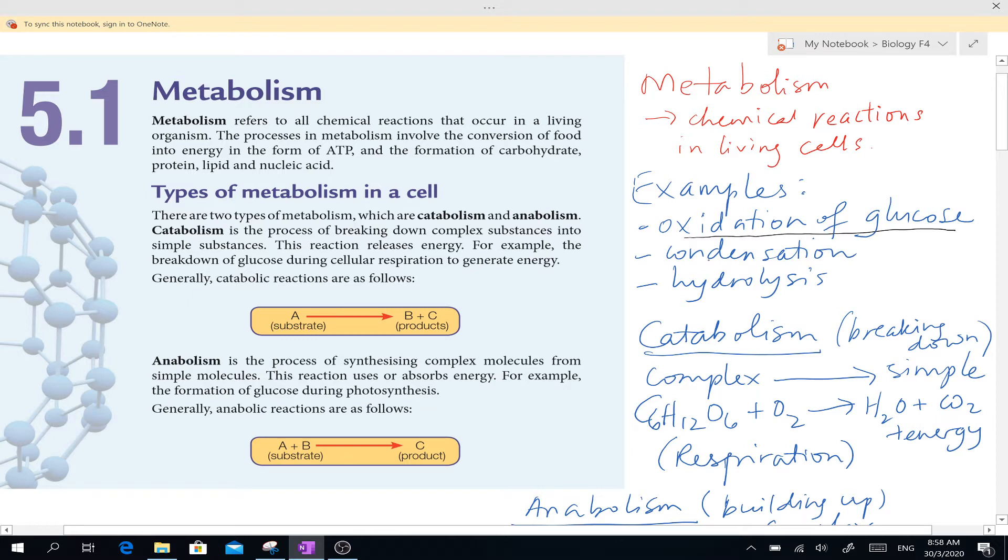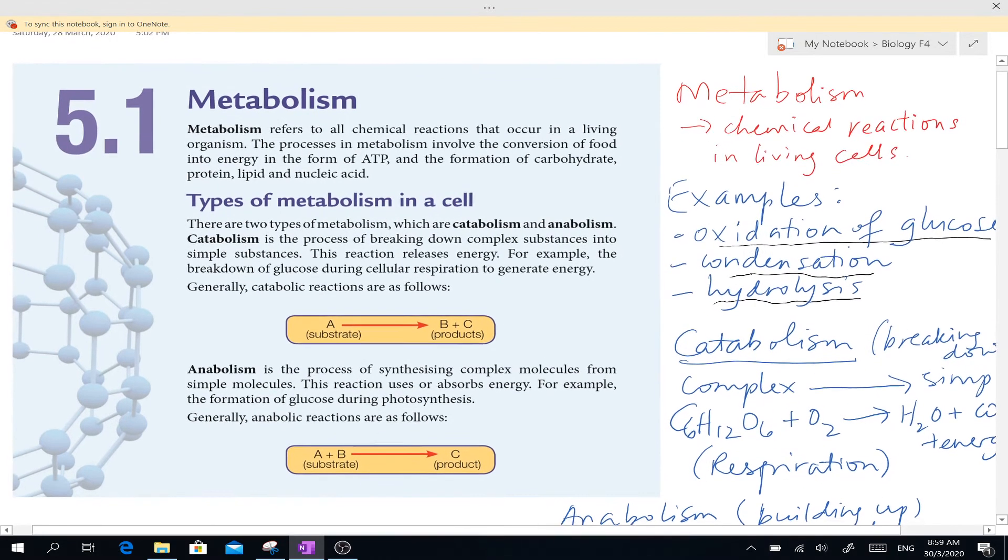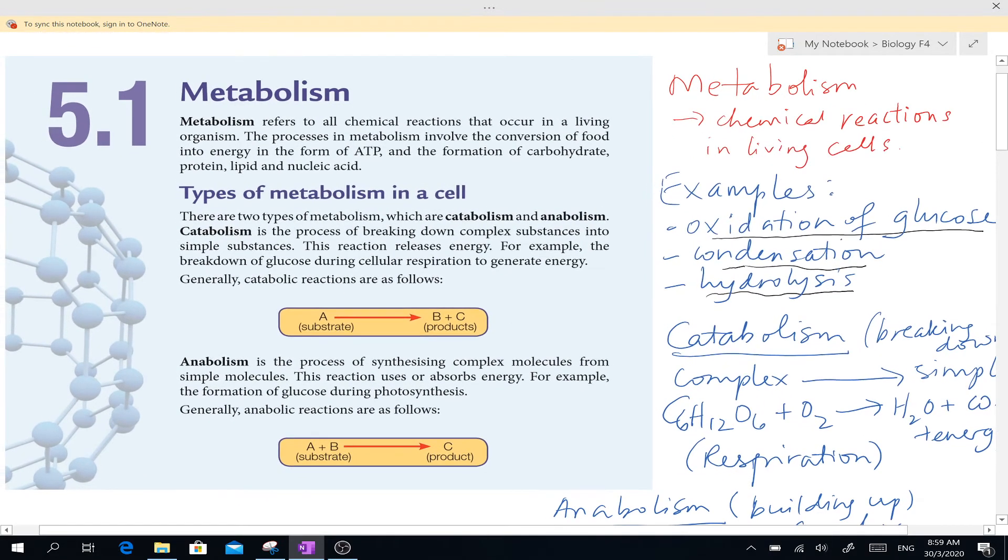Remember how the mitochondria produces energy? This is the process of oxidation. It happens in living cells. Condensation—remember the process of linking your monomers, your monosaccharides and amino acids, in order to form polypeptides and so on. And also breaking down those molecules into smaller basic units we call hydrolysis. All this happens in living cells and these are just a few examples of metabolism. Other examples would be like digestion when you break down complex molecules into smaller molecules.